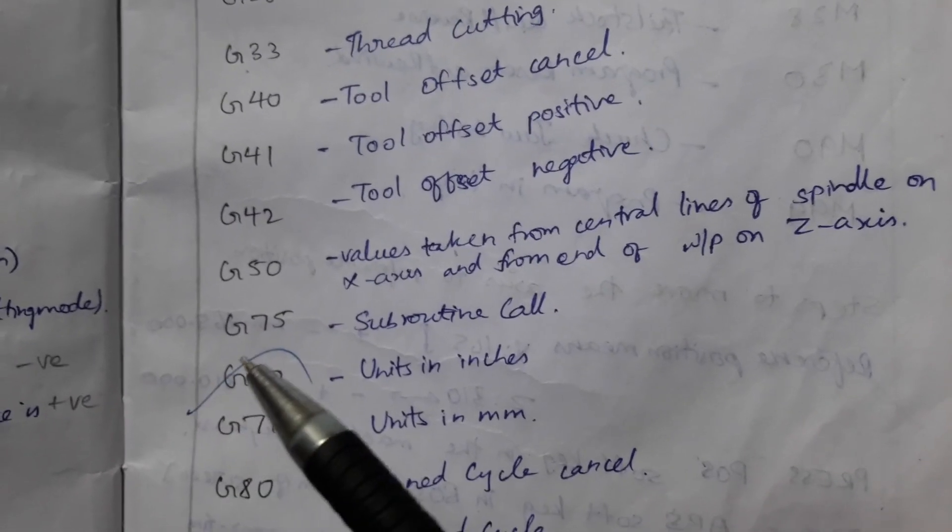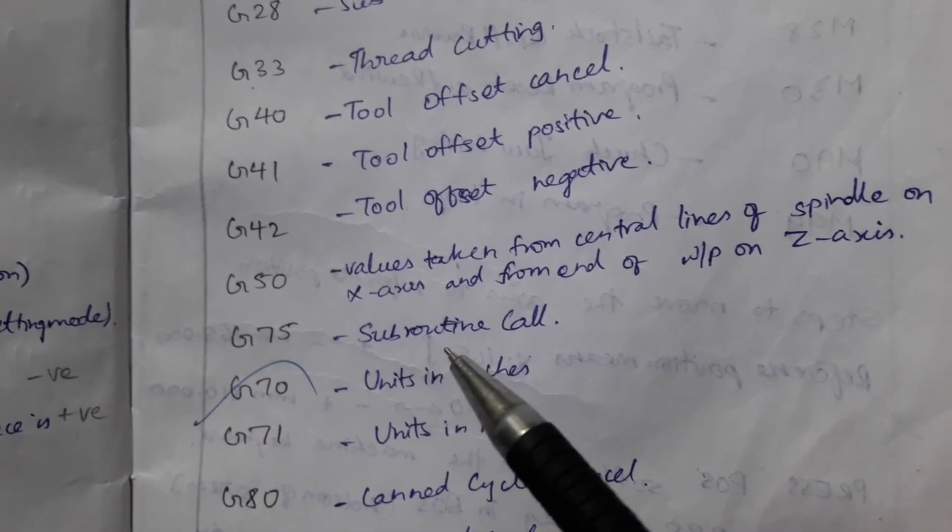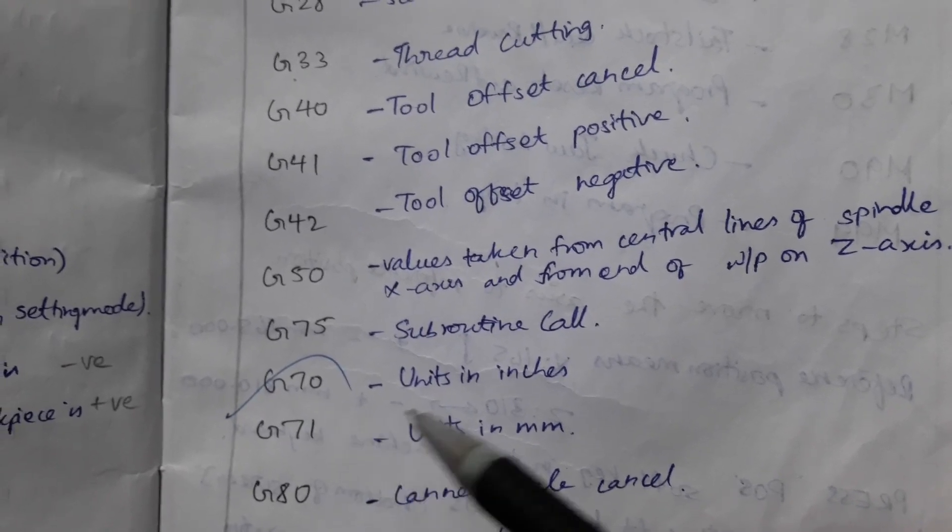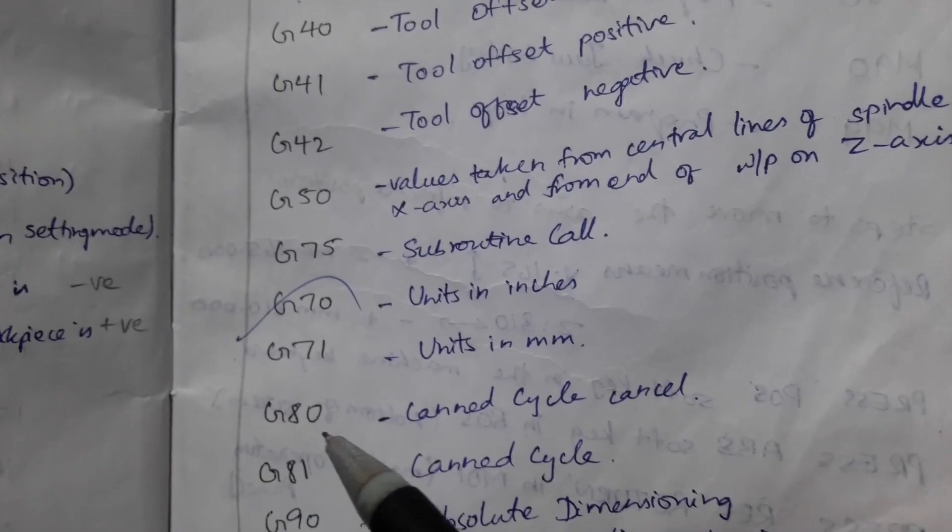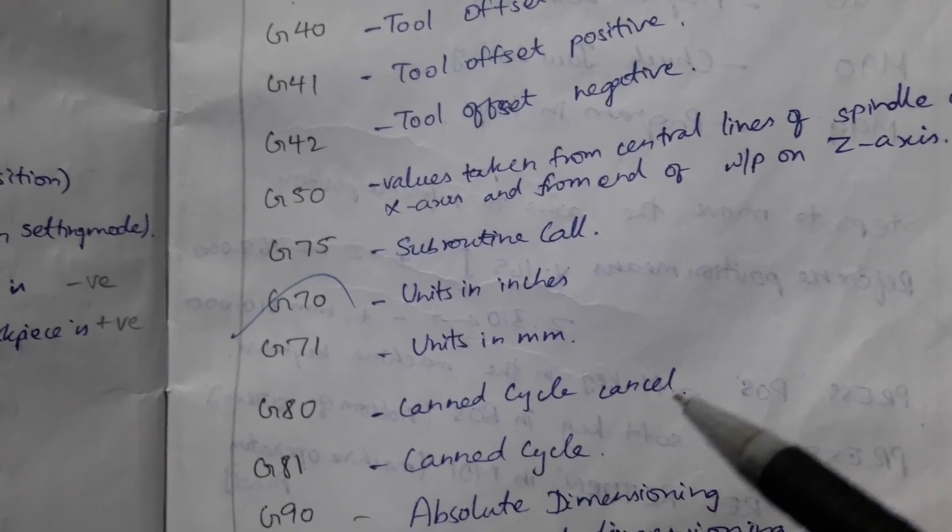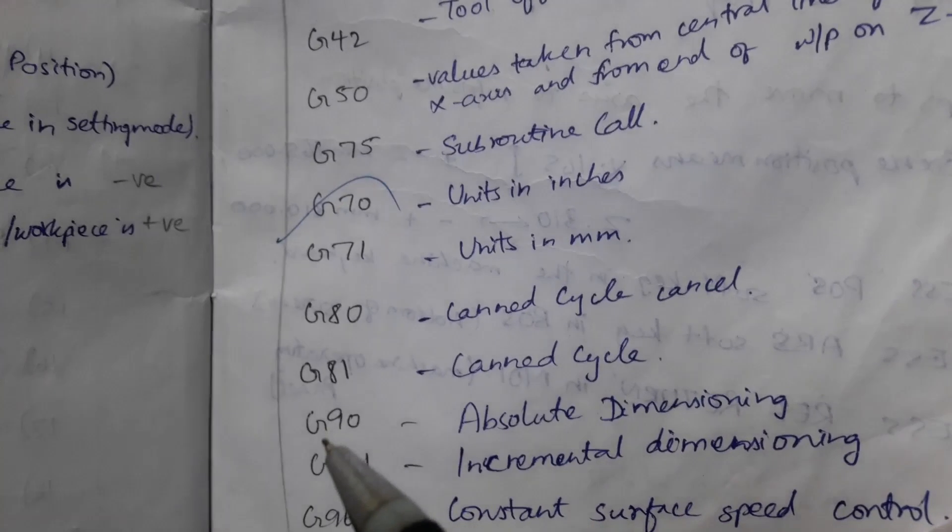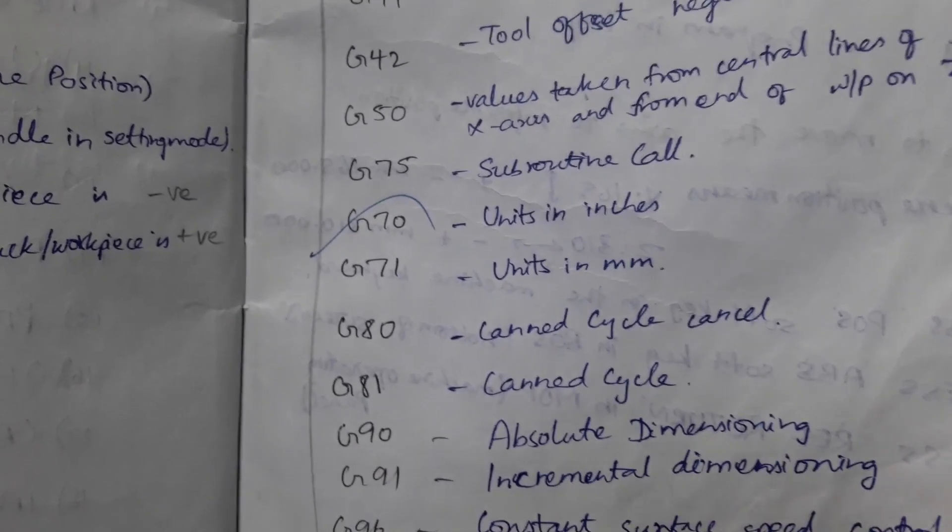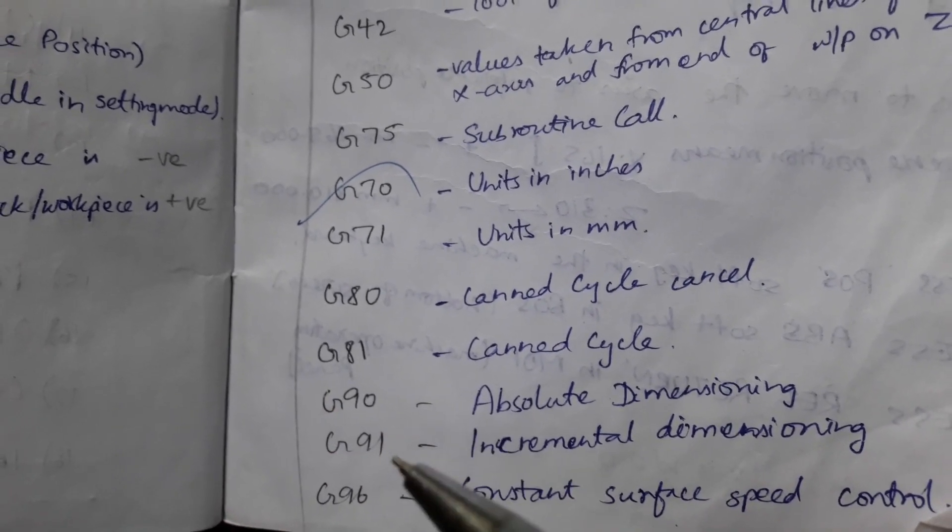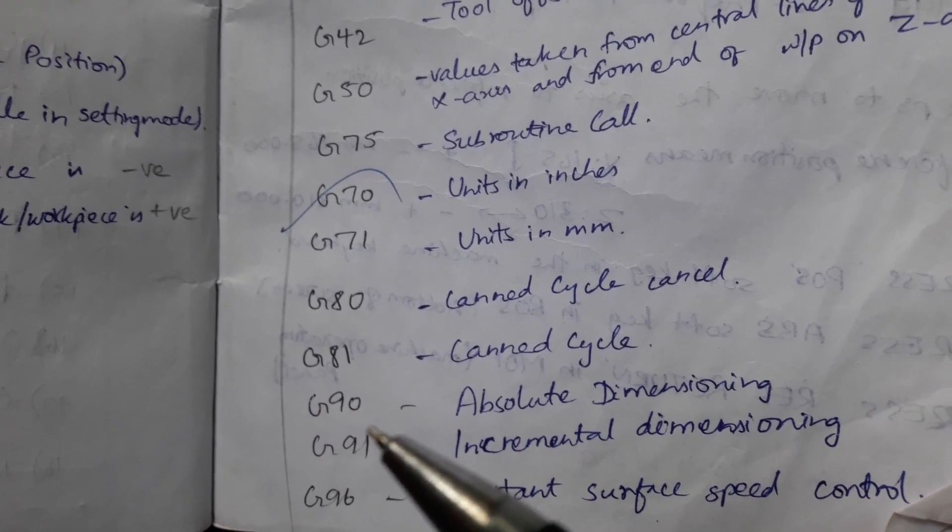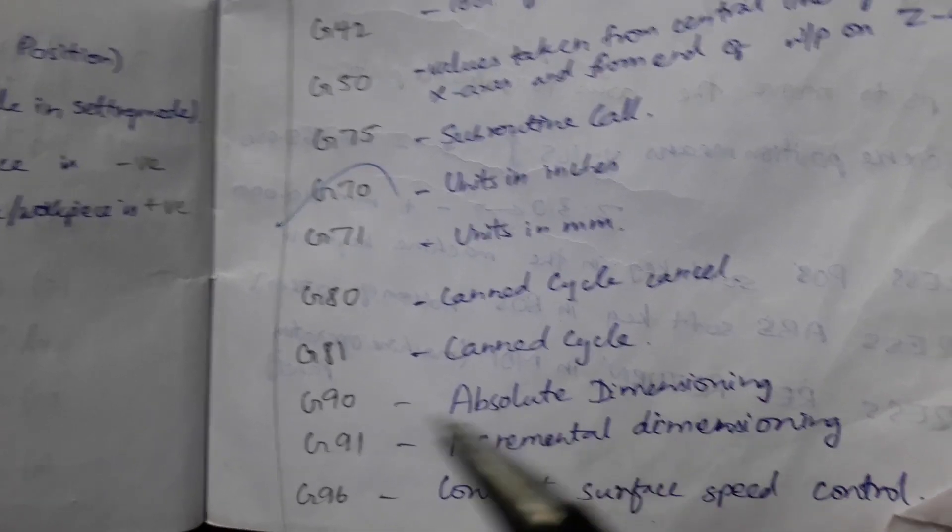G75, subroutine call. It is used for a subprogram. G70, units in inches, and G71, units in millimeters. G80, canned cycle cancel. G81 to set canned cycle. G90, absolute dimensioning. G91, incremental dimensioning. So what is the difference between G90 and G91?